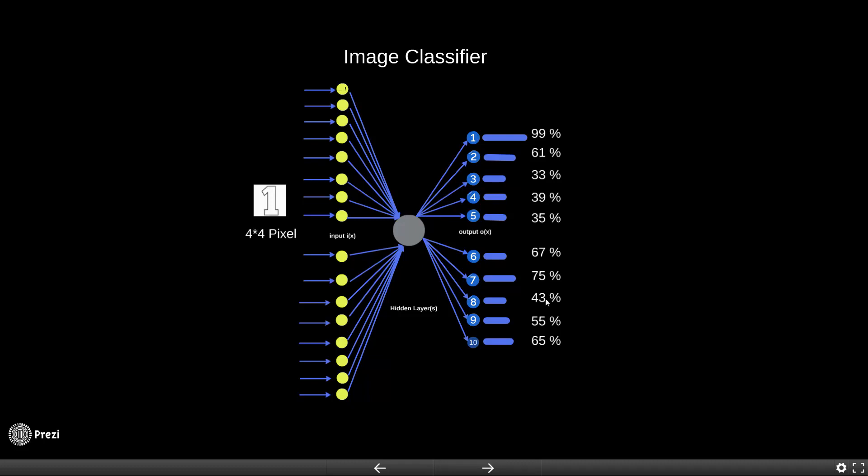This is just an example, of course. It should think that the 1 is 99%, so it's pretty confident that the input 1 is a 1. It also thinks that 7 is 75% because 7 is very close to 1.